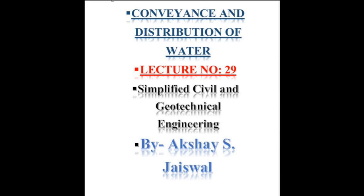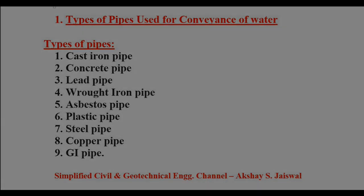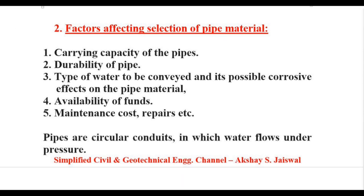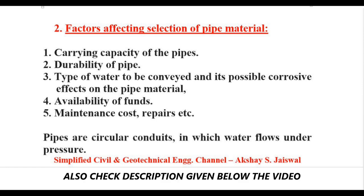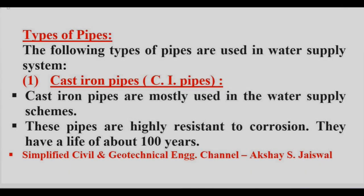Chapter name: Conveyance and Distribution of Water. Point number 1: Types of pipes used for conveyance of water. The pipe types are: cast iron, concrete, lead, wrought iron, asbestos, plastic, steel, copper, and GI pipe. Factors affecting selection of pipe material depend upon carrying capacity, durability, type of water to be conveyed and its possible corrosive effects, availability of funds, and maintenance cost and repairs. Pipes are circular conduits in which water flows under pressure.